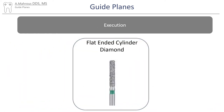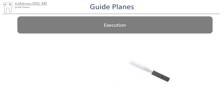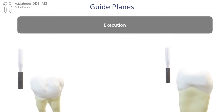You'll need the flat-ended cylinder diamond for this. After careful evaluation of the planned path of draw, the diamond is brought close to the tooth in a direction parallel as possible to the planned path on the surveyor.